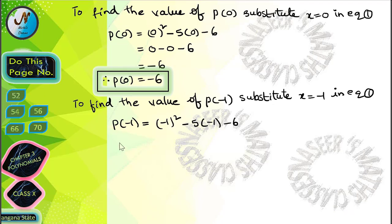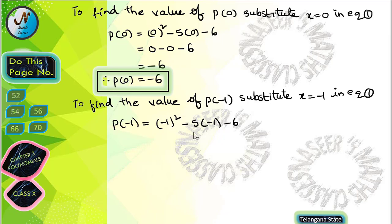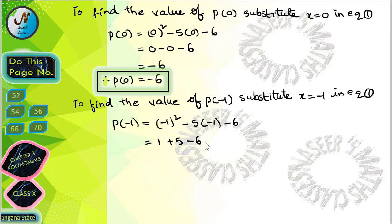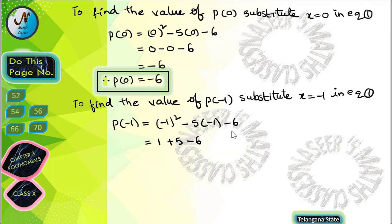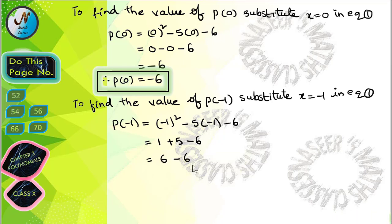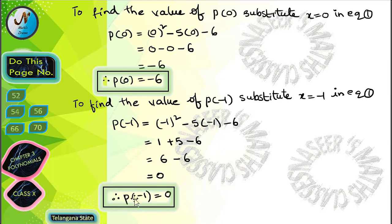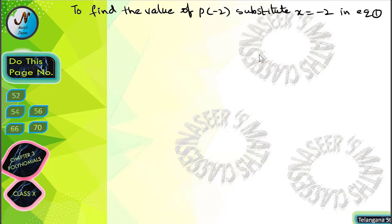To find the value of p(-1), substitute x is equal to minus 1 in equation 1. After substitution and simplification, we get 1 minus 5 into minus 1 minus 6, which gives 1 plus 5 minus 6, equal to 6 minus 6, which is 0. Therefore, p(-1) is equal to 0.